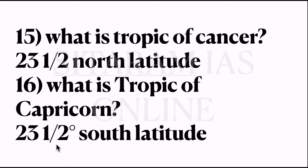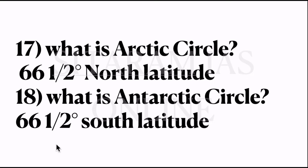Fifteenth question: what is the Tropic of Cancer? Tropic of Cancer is 23 and a half degrees north latitude. Sixteenth question: what is the Tropic of Capricorn? Tropic of Capricorn is 23 and a half degrees south latitude. 17th question: what is the Arctic Circle? Arctic Circle is 66 and a half degrees north latitude. And what is the Antarctic Circle? It is 66 and a half degrees south latitude.